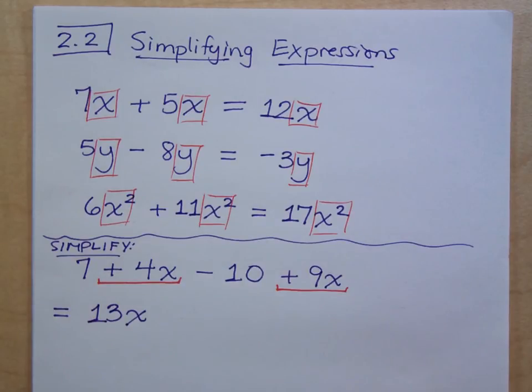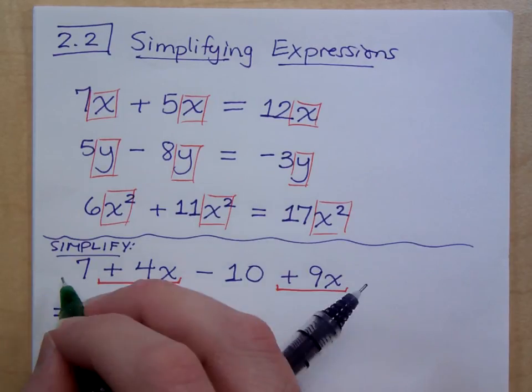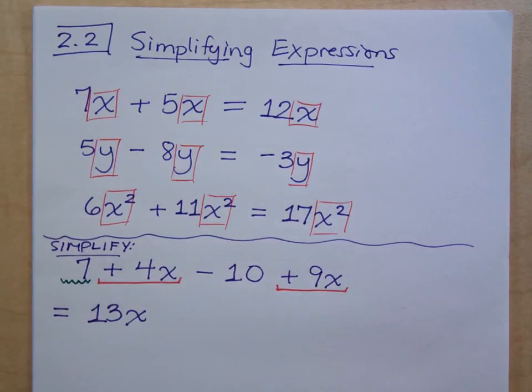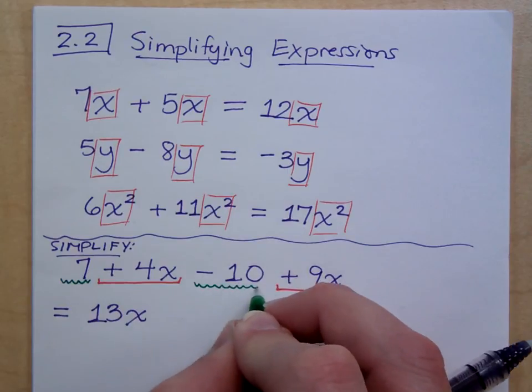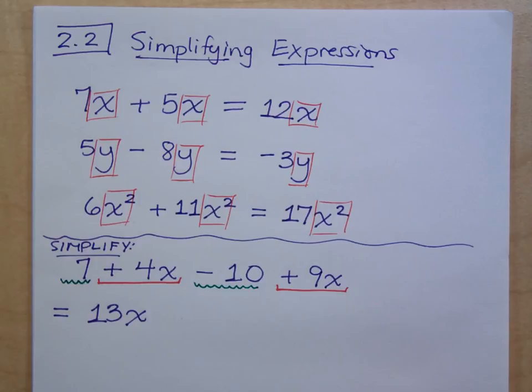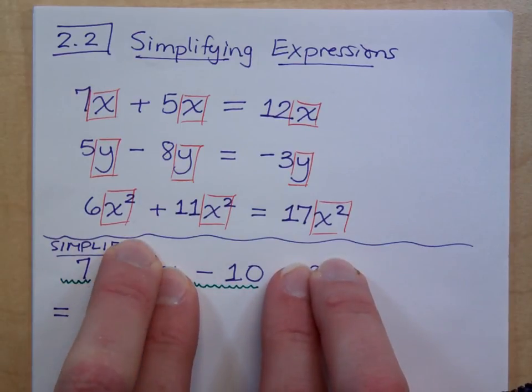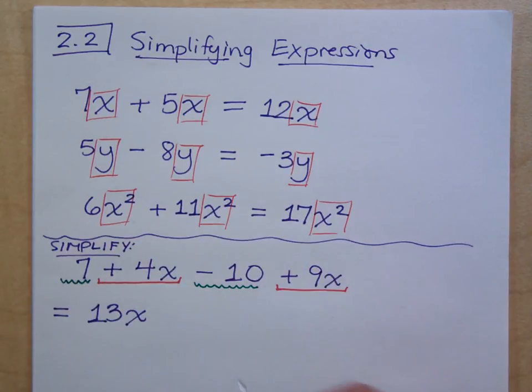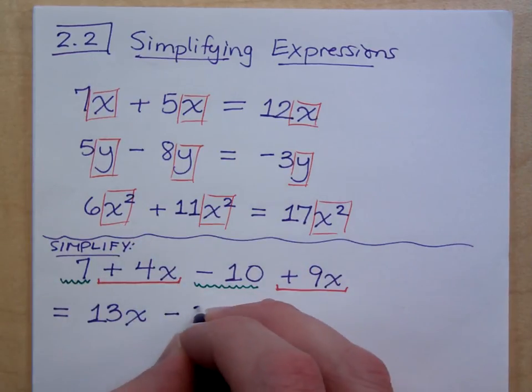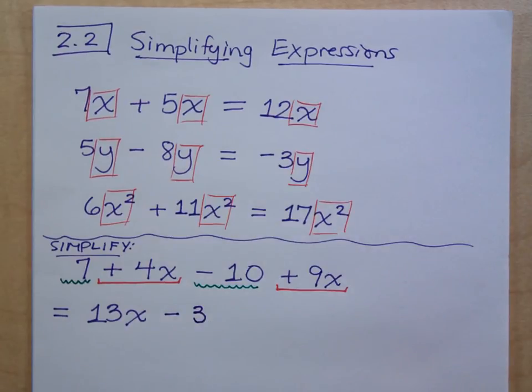And then look at your constant terms. You have a 7—what's understood to be the sign for that 7? Positive. You have positive 7 and you've got your negative 10. What is all of that? What's 7 minus 10? It's negative 3. So minus 3. Now are these two guys like terms that can be combined? No, they are not like terms. This is a variable term, this is a constant term, so I can't do anything else with that.